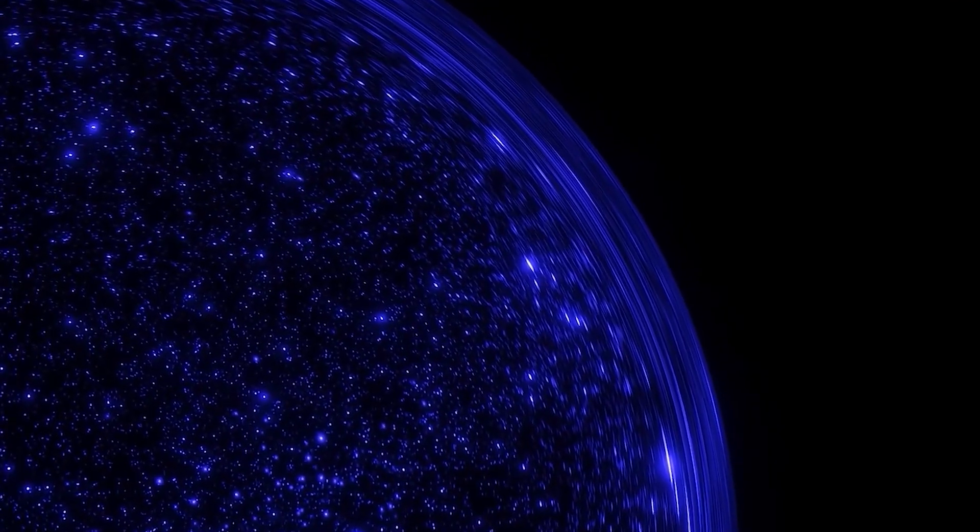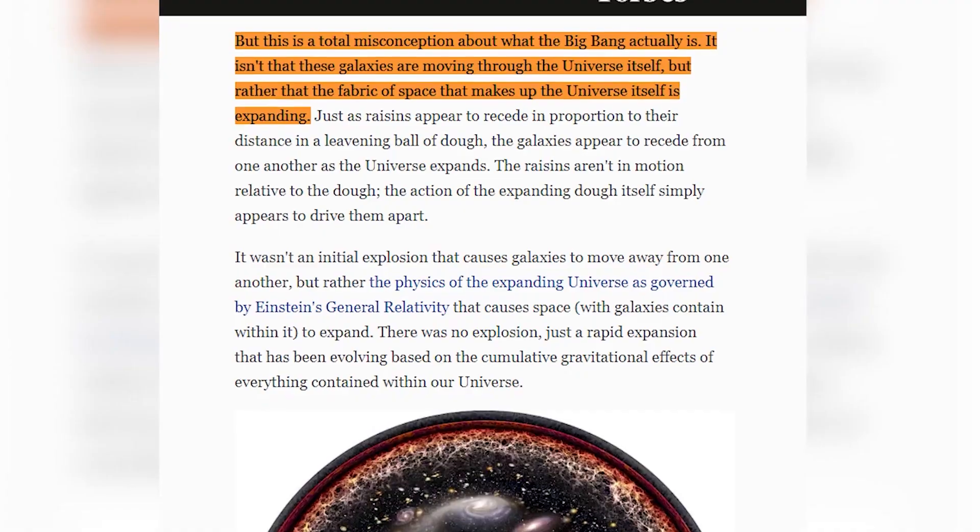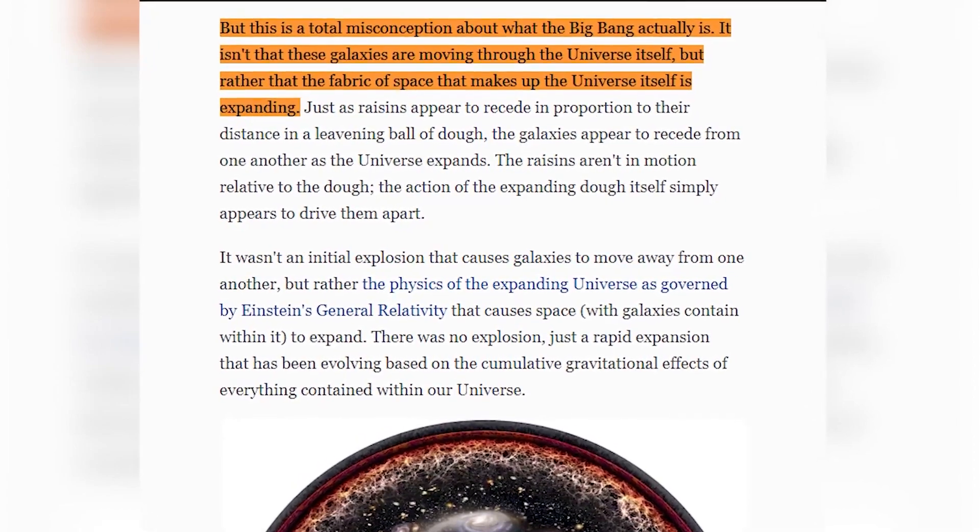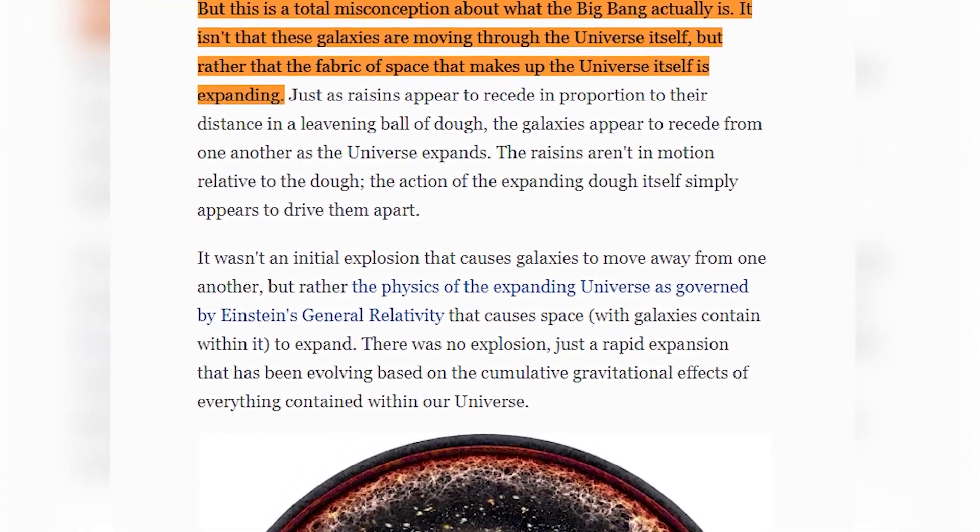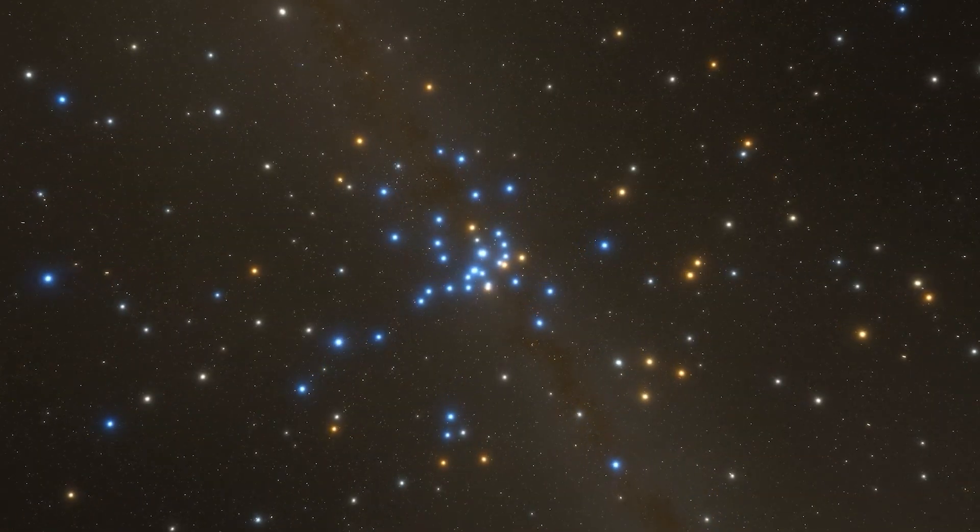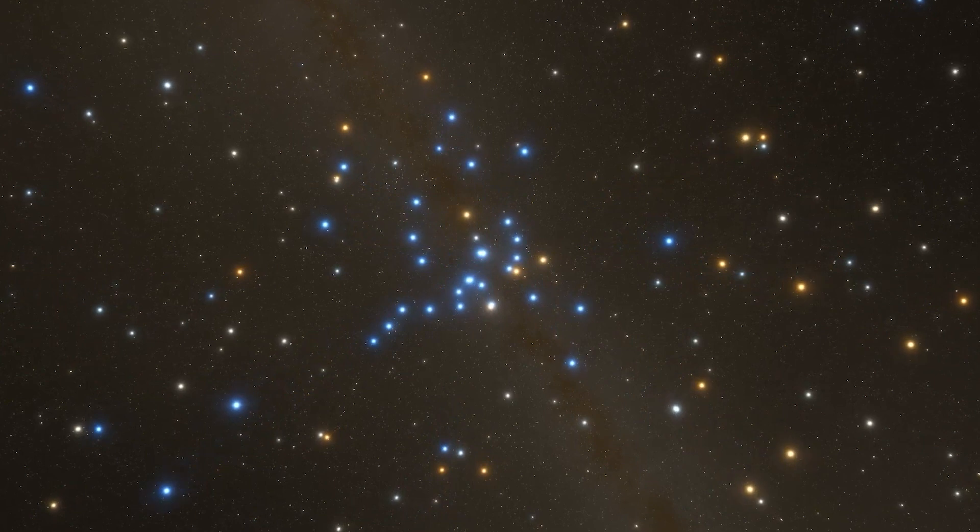The Tolman test says that if the universe wasn't expanding, and was just staying the same, the surface brightness among all galaxies would remain the same no matter how far away they were. However, the web images show that this is not the case. In these photos, far away galaxies have decreased surface brightness.